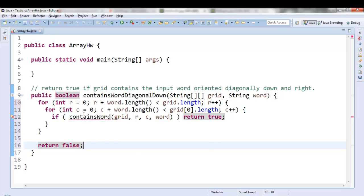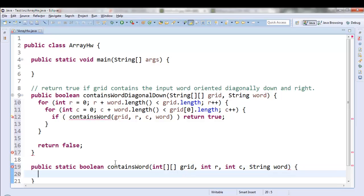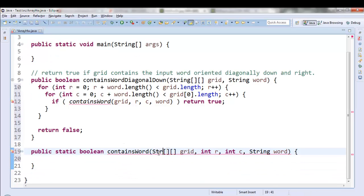We've talked in the past about using helper methods. This is a great way to control the complexity of the problem. It's by separating out this particular piece of it. So let's make this method. Public static boolean contains word, and it'll be a 2D string called grid. We've got a row, we've got a column, and we have a word. Oh, not int. String.